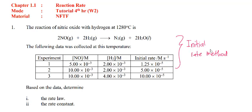Apply the initial rate method. Once you already know the order of reaction for these two reactions, you can write down the rate law, and from the rate law, substitute any value from any experiment to find the value of the rate constant. Remember, the units for the rate constant always depend on the total order of reaction.